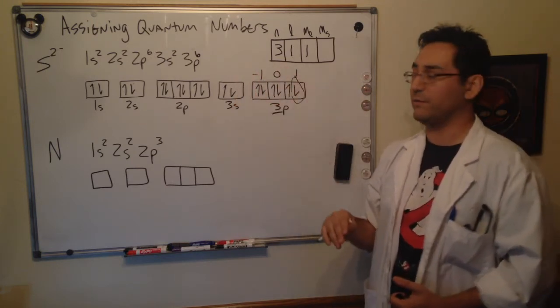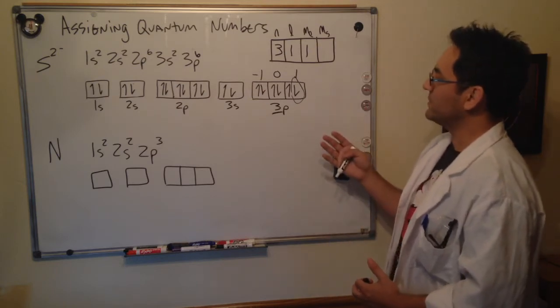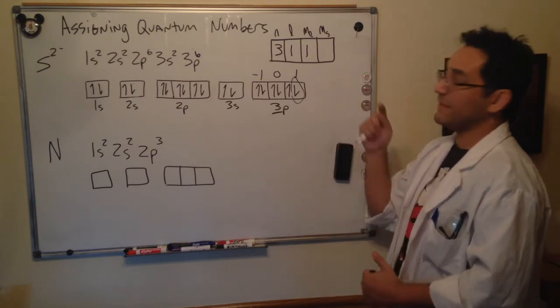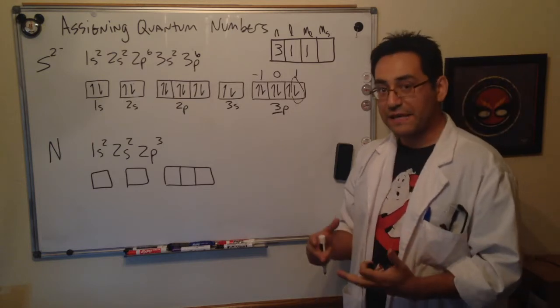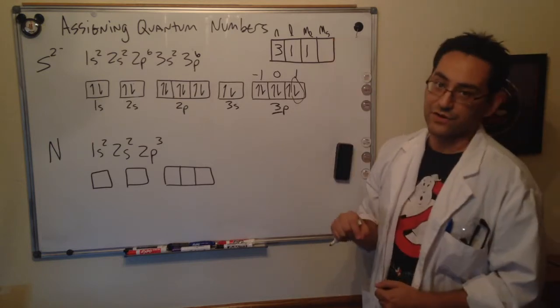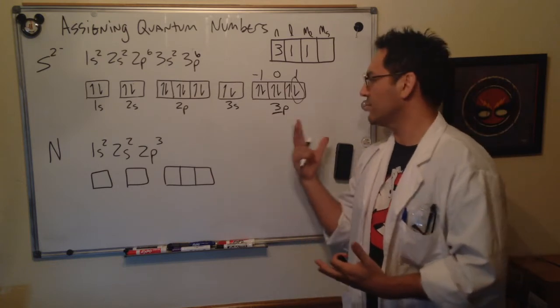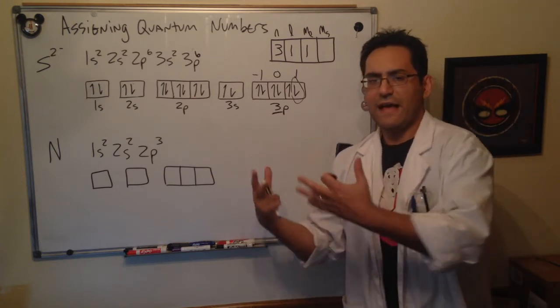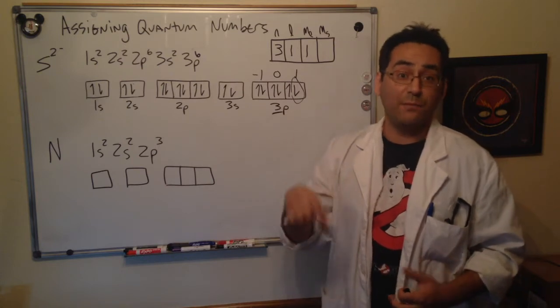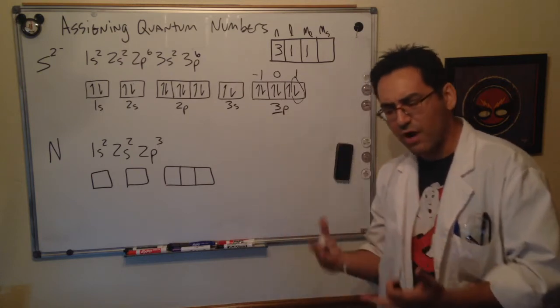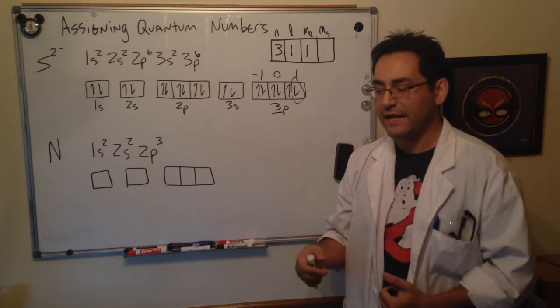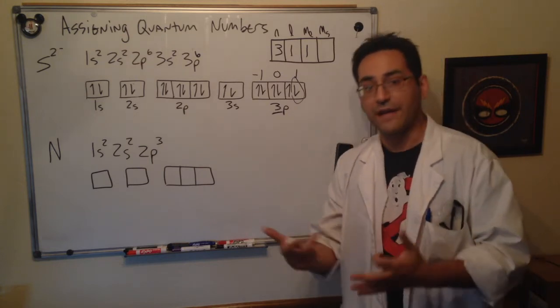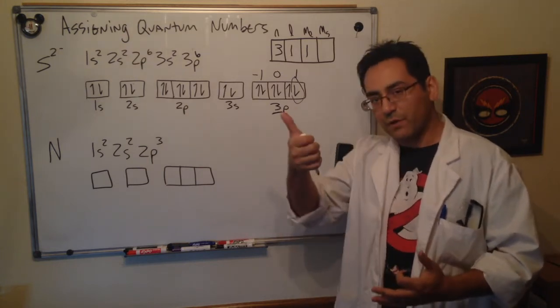Okay, so now we get to the fourth quantum number. This one's actually determined by the spin of the electron, and the way we relay that information is just saying that the electron can be up or down. This is a property of electrons that only appears when we put it in a magnetic field and it'll cause the electron to orient with either the up or the down type direction with the field.